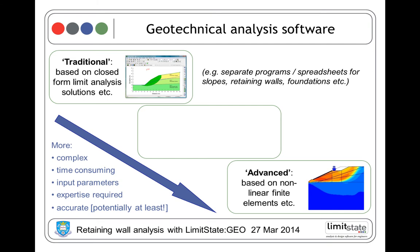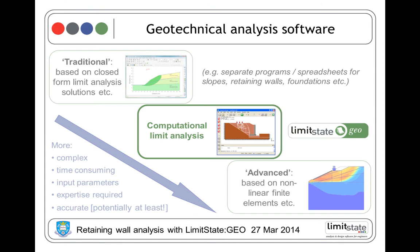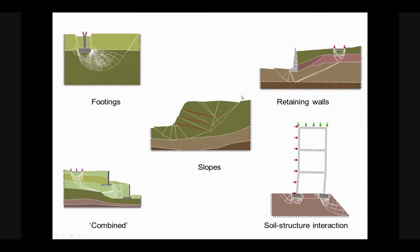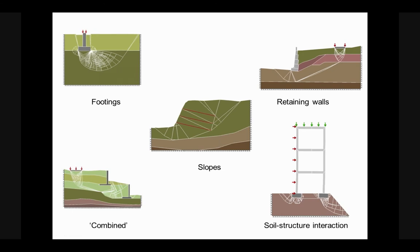To set the software in context: on one hand there is software based on conventional approaches such as method of slices, which works well specifically for slope problems. For more complex analyses, finite element software can model any problem geometry and complex soil behaviour but typically requires a lot more expertise to use. Computational limit analysis fills the gap, providing an ultimate limit state analysis capability with the geometry flexibility of finite elements and the ease of use of traditional methods. The only parameters required are c, phi, and gamma — essentially unit weight. LimitState:GEO can determine the collapse state for any problem geometry, modelling slopes, retaining walls, structural elements, and soil reinforcement.